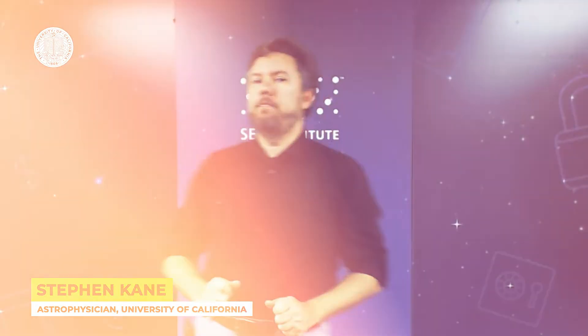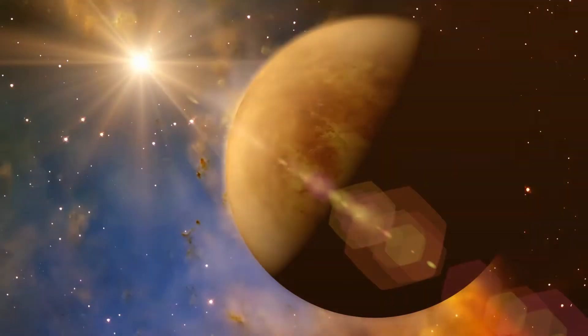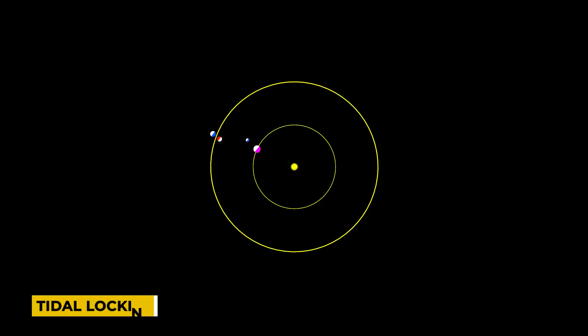Well, according to a new study led by University of California astrophysicist Stephen Kane, the thick and stormy atmosphere of Venus could be to blame. Without the atmosphere, Kane believes that Venus's rotation would speed up to match its orbit around the sun, a phenomenon known as tidal locking.